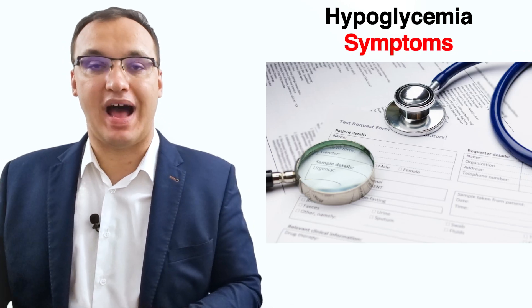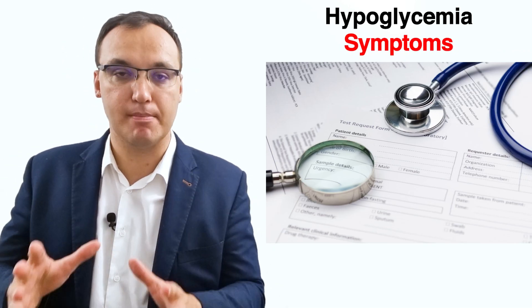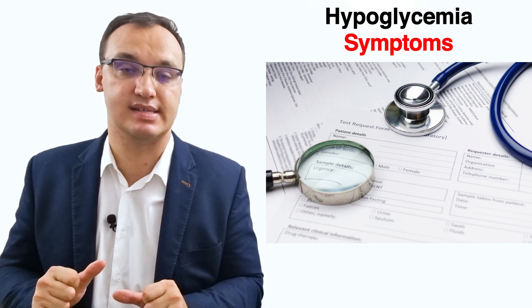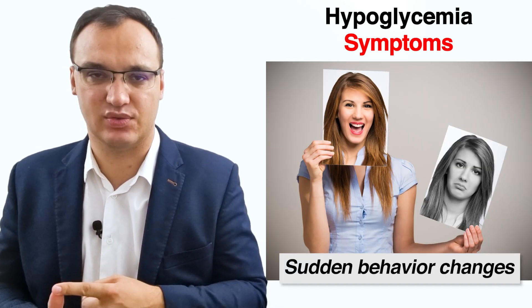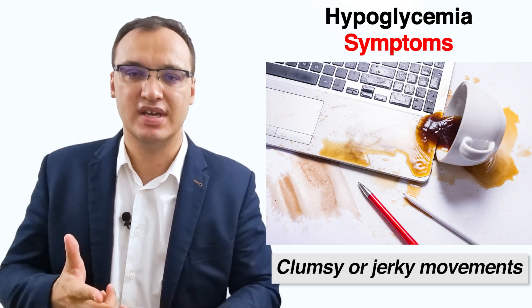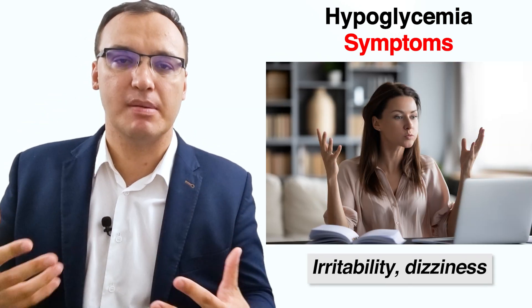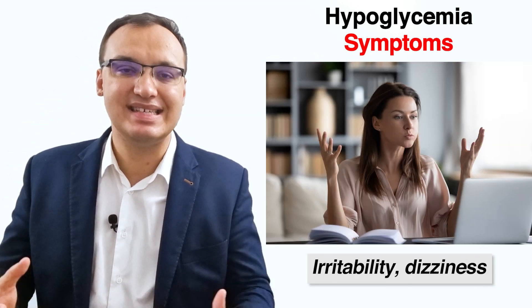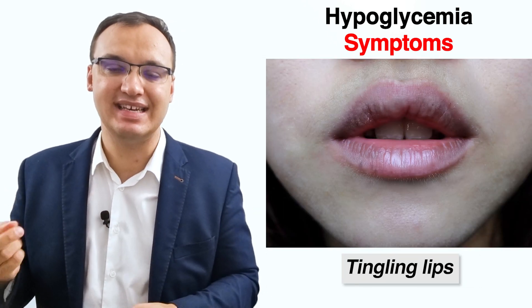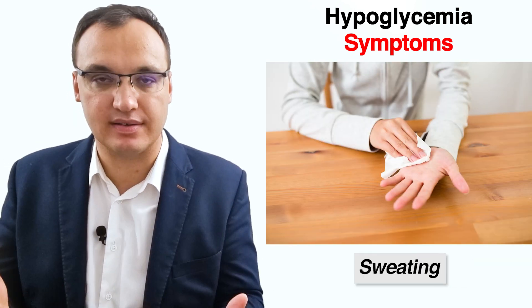The symptoms of hypoglycemia may differ from person to person. However, the most common early signs include sudden moodiness or behavior changes, clumsiness, jerky movements, headache, irritability, dizziness, shakiness, tingling lips, hunger, pale skin color, and sweating. There are a lot of diffuse symptoms associated with low blood sugar.